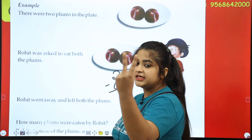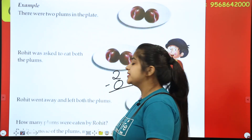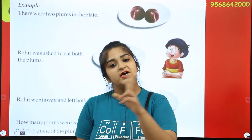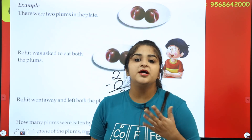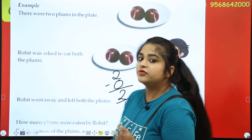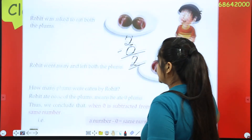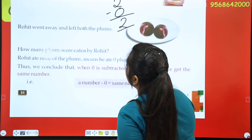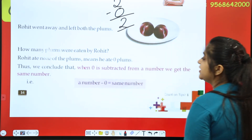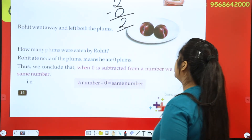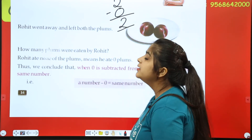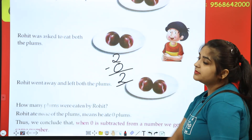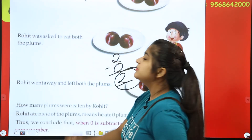So there were two plums, and Rohit ate zero. If we subtract zero from two, what will the answer be? Two will remain. If Rohit didn't eat any plums, there will still be two plums left. Thus we conclude that when zero is subtracted from any number, we get the same number.